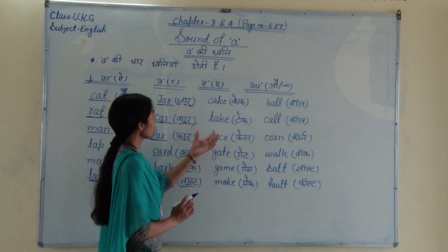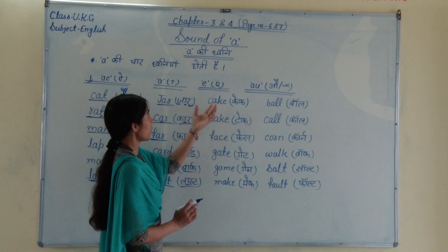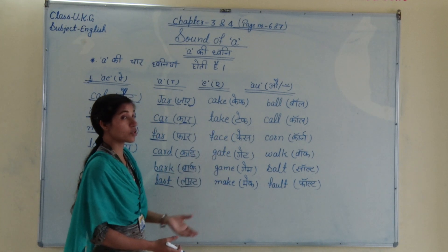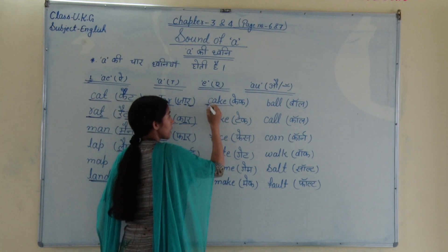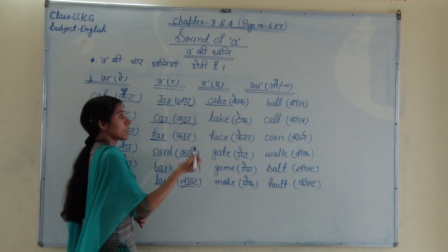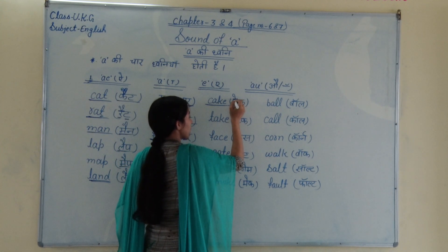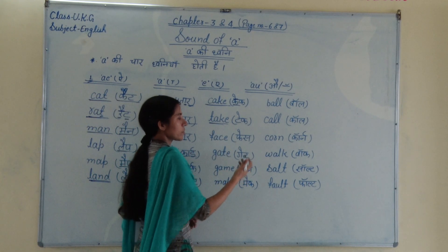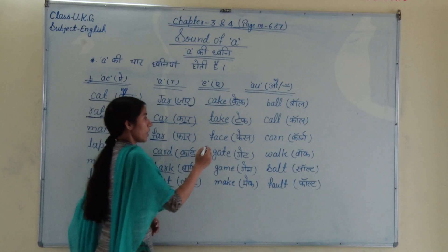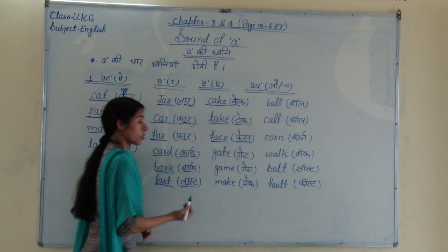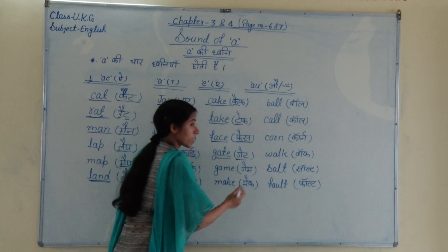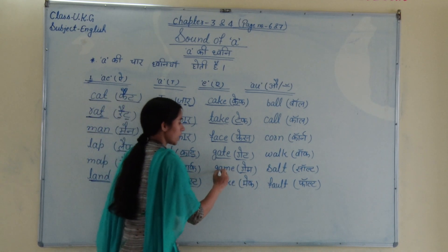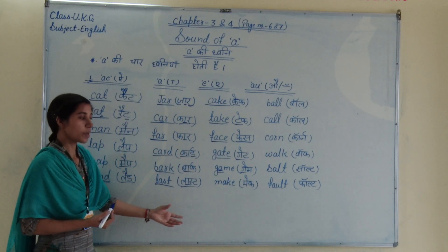Ab teesra hai akka: sound of 'a' has a long 'a' — a ke rupi hora hai. Kuch aise words hote hain jisme 'a' ka ucchaaran a ke rupi hora hai. Jaisa ki yahan pe dikha hua hai: c-a-k-e — cake. Yahan pe 'a' ka ucchaaran a ke rupi hora hai. Face — face. Uske baad hai akka: gate. Phir hai akka: give. 'A' ka ucchaaran a ke rupi. Met — met hi hogaya.